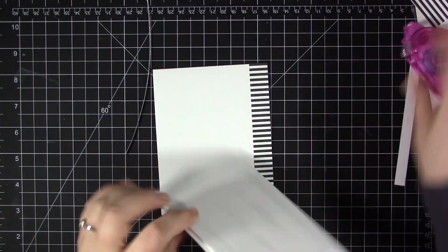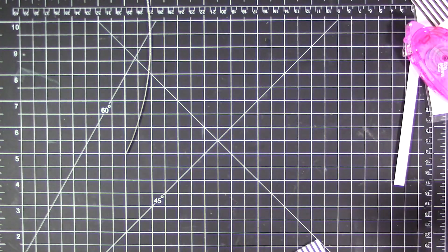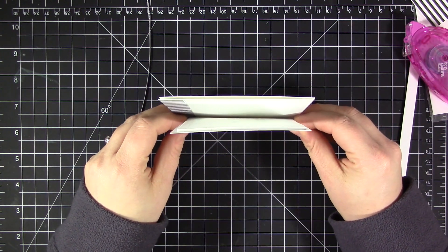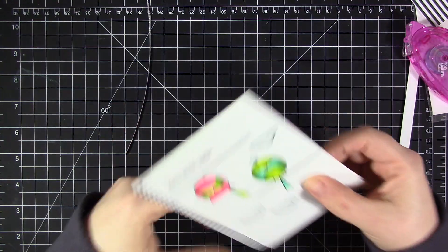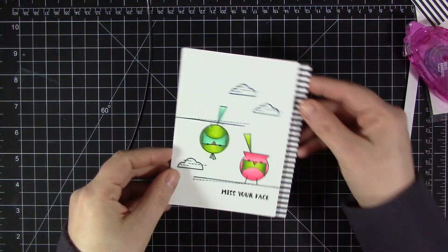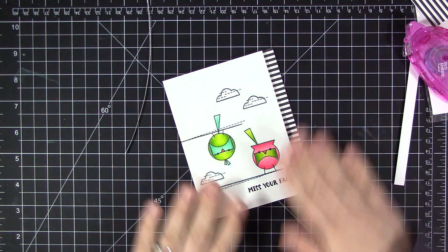I just added some adhesive to the back of this panel. I like to flip my card upside down and kind of position the panel against the side where it's going to go, and then just let everything fall onto the desktop. That kind of keeps everything lined up so that it ends up perfectly positioned on that card front.